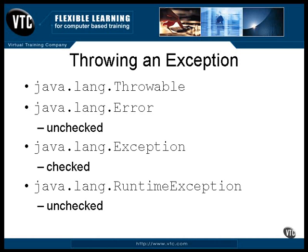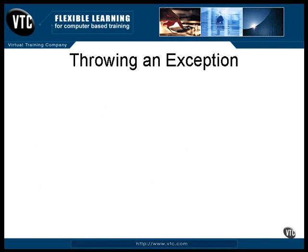If this is all new to you and you're a little confused by the names, there's a reason for it — the names are confusing. All of these classes are throwables, no matter what their name, and they are all exceptions. The whole process is known as exception handling, no matter what class the specific object being thrown is. Anything that's an extension of the Error class is unchecked. Anything that's an extension of the Exception class is checked, with the exception of the RuntimeException class. Anything that is an extension of RuntimeException is unchecked. The name RuntimeException is odd too, because all of these exceptions are thrown as a result of a runtime problem of some sort. But this is not the first, nor will it be the last time that you'll find naming confusion in Java.